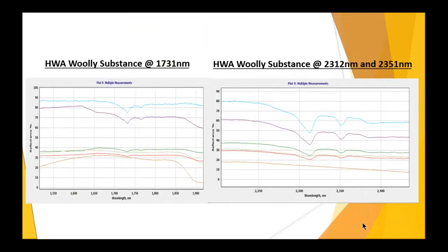Finally, I have the zoomed-in displays with several scans that we took. All of these are of the heavily infested scans — the blue line above is still of the woolly substance only at the top, and the rest of the scans below are just several more representative scans, some with more of the leaf and some with more of the woolly substances, some targeting more of the branches and the twigs as well.